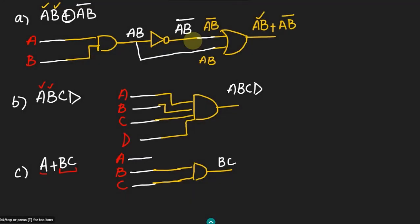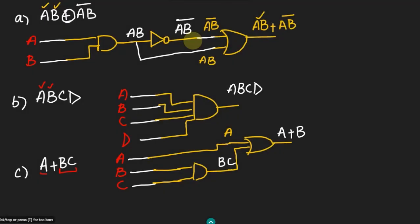With this bc I have to add a, so for it I have to use this OR gate here and it will have two inputs. Here I should have a and here I should have bc. This will be connected here and here I will get a plus bc which is the output of my circuit. The last one is part d: abc plus d.